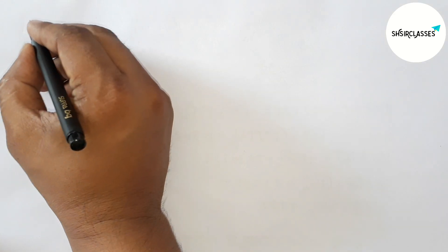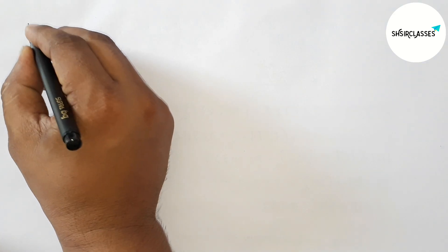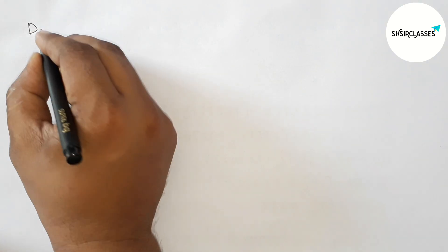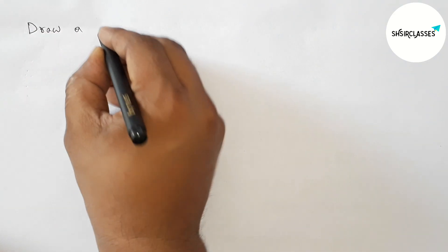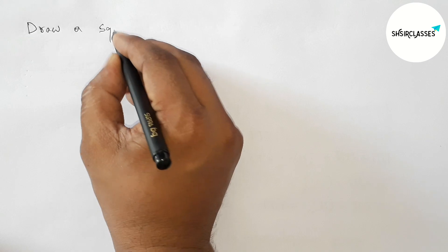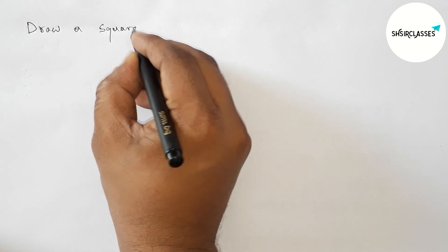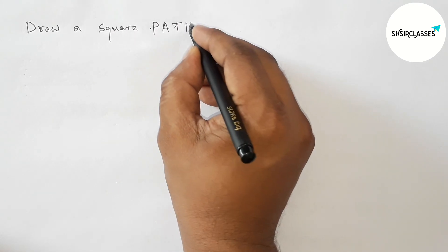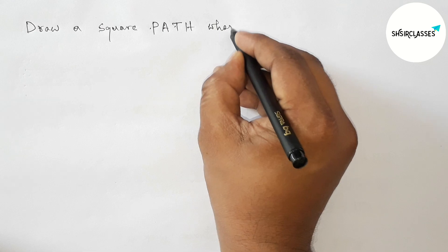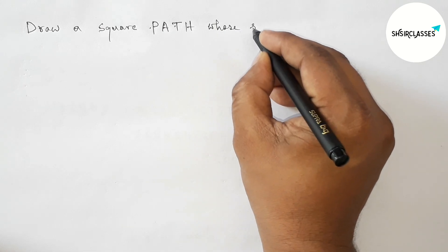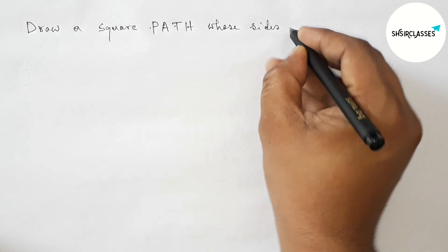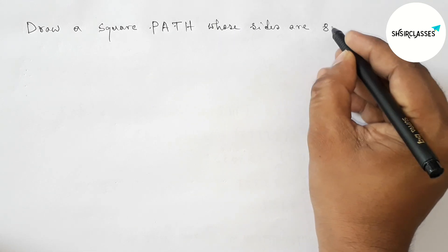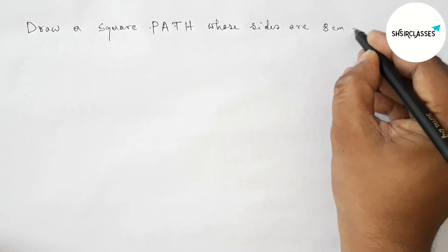Hi everyone, welcome to Essay Share Classes. Today in this video we have to draw a square PATH whose all sides are 8 centimeters each, in an easy way. Please watch the video till the end. Let's start.